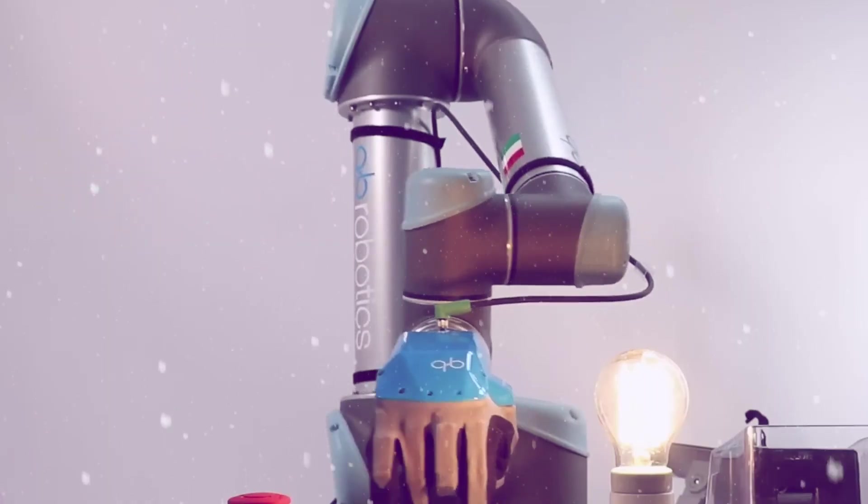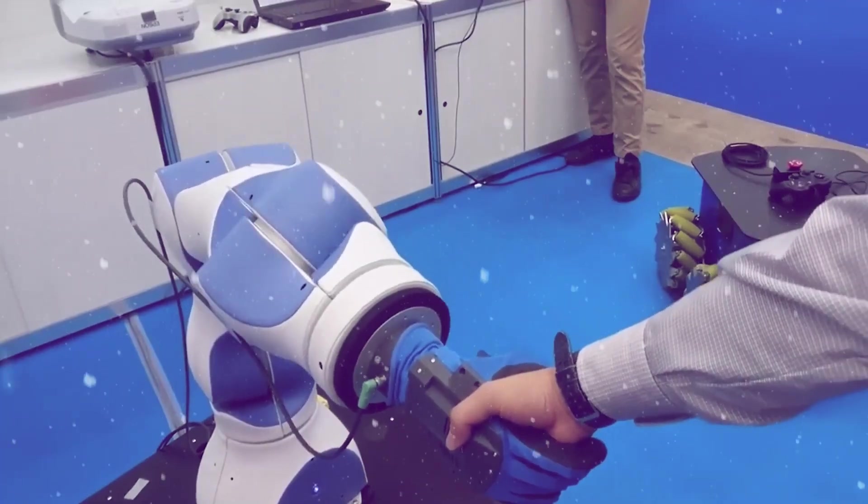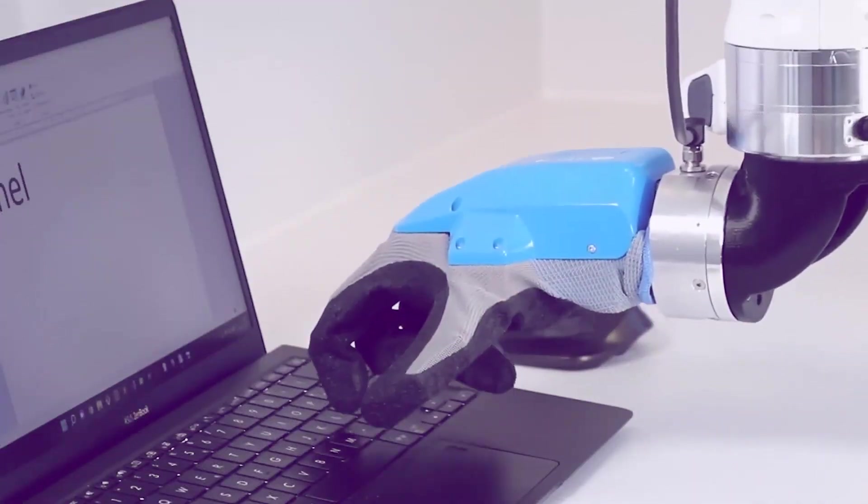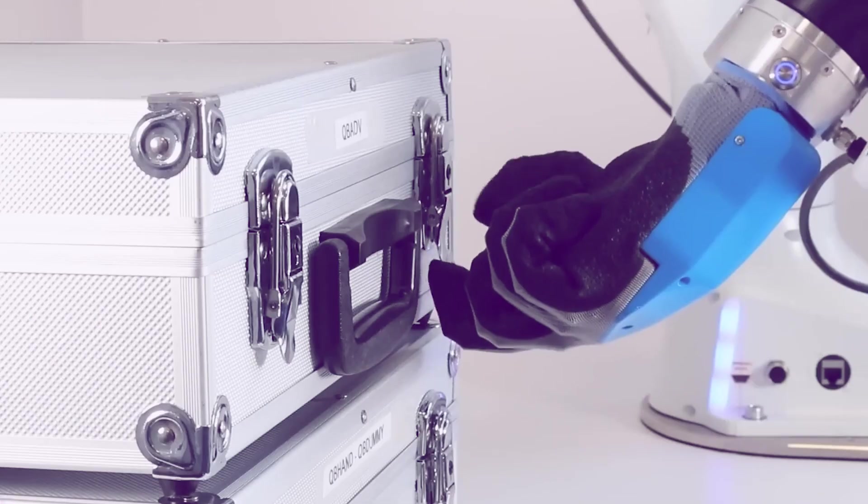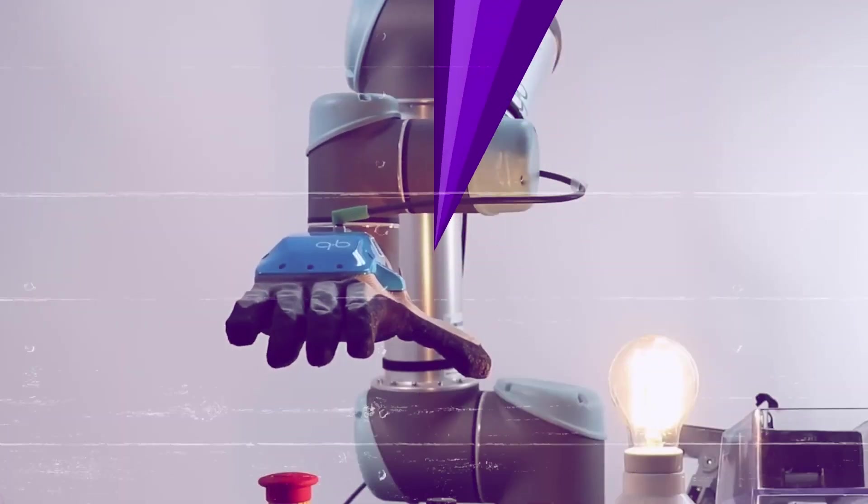See another remarkable creation, the soft hand created by Italian company QB Robotics. It's a human-like robotic hand based on soft robotics technology. With its flexible and adaptable nature, it can interact with its surroundings, objects, and even humans without causing harm. Its gripping ability is truly impressive.